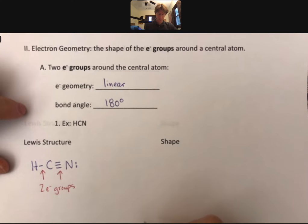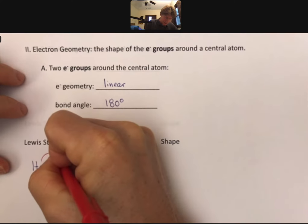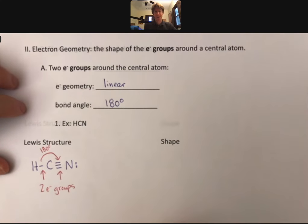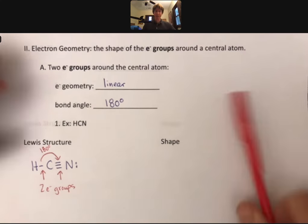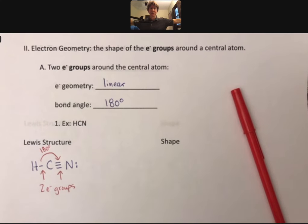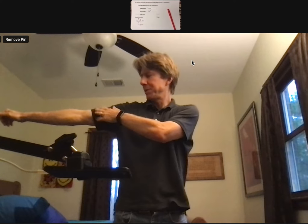That's what I mean by two electron groups around the central atom. And the shape of this, here's the bond angle, 180 degrees, and that's basically like saying, if I have two things that are as far apart as possible, they will be 180 degrees apart. As soon as they go closer, they'll be less than 180 and then they'll repel.